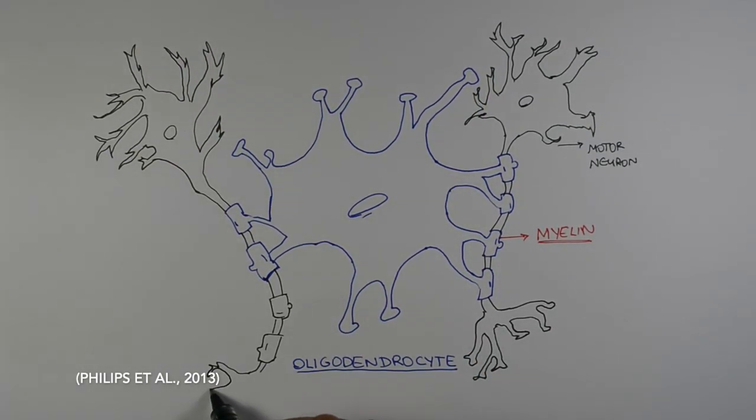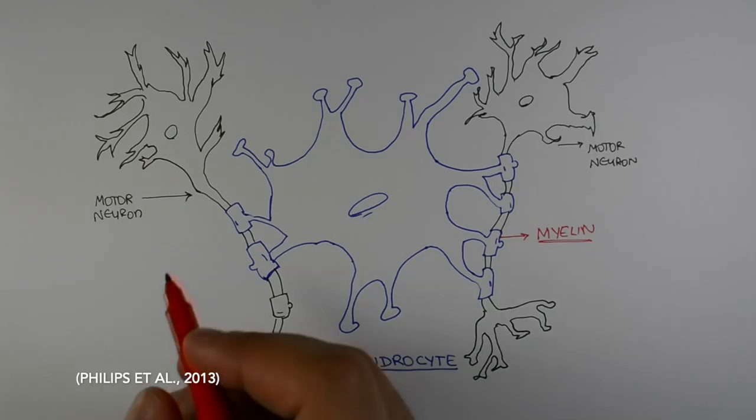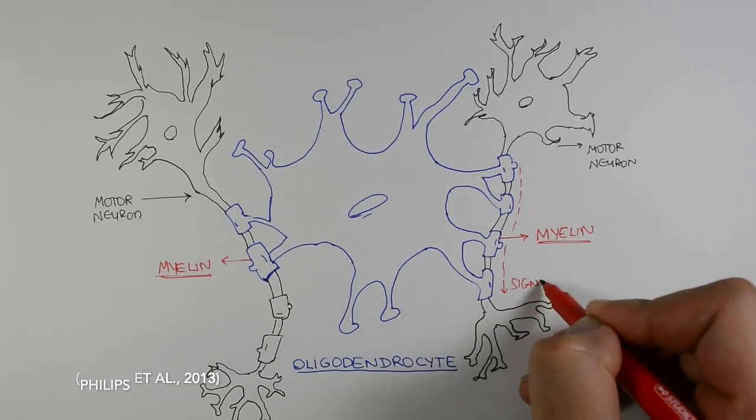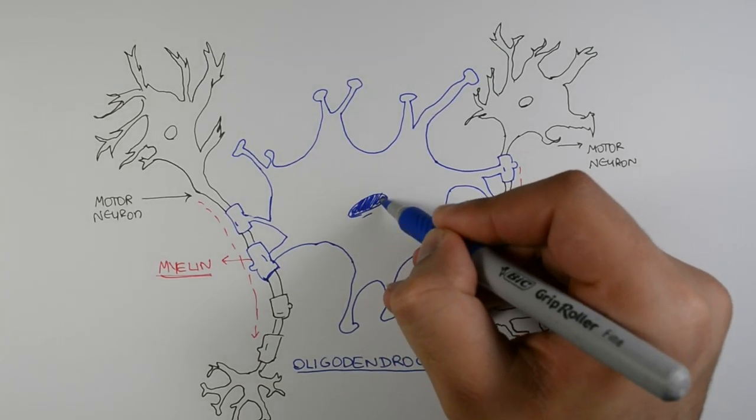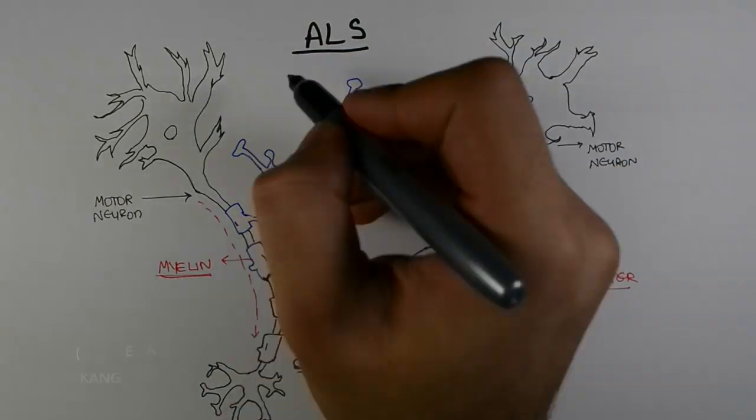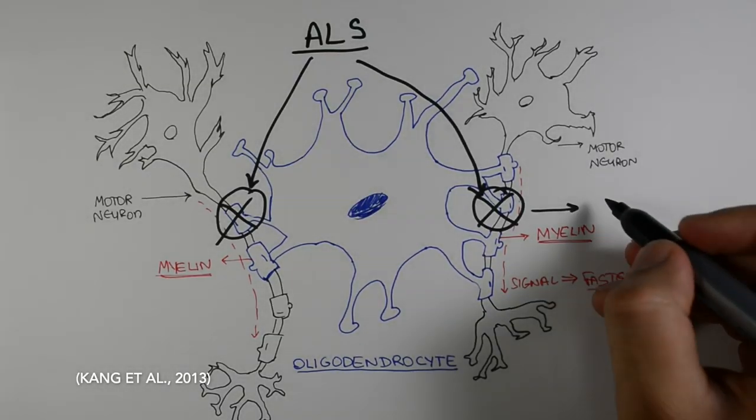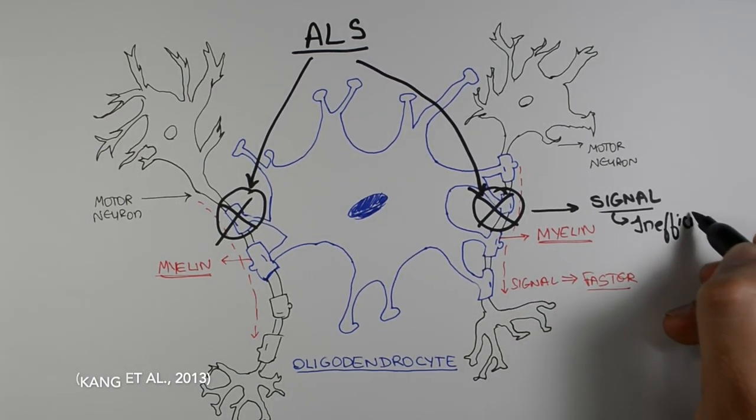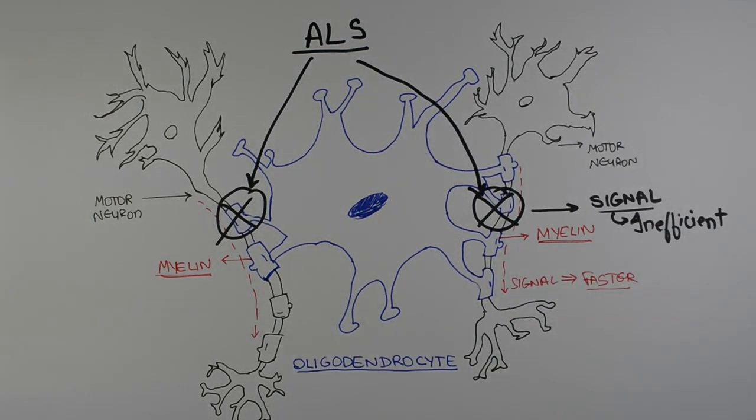Patients with ALS seem to have an abnormal myelin structure and even degenerated oligodendrocytes, which impacts how fast signals can travel through the body. Also, newly generated oligodendrocytes in patients with ALS seem to be dysfunctional. This means myelin can't be formed effectively around neurons and the nervous system is unable to do its job efficiently.